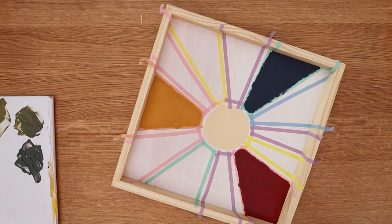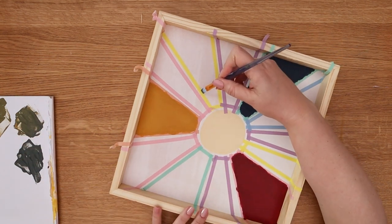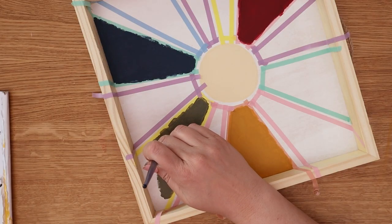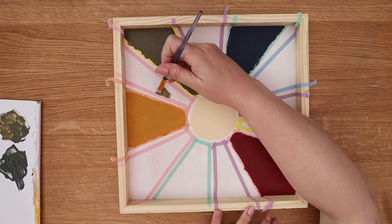Then we are ready to paint in those three sections between the yellow and the blue. I'm starting with the center section which is the green. Then I'll paint the yellow green in between green and yellow.